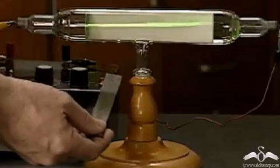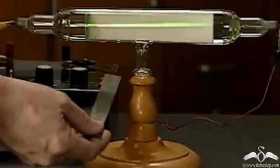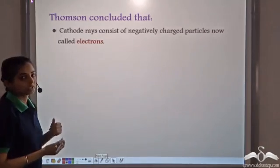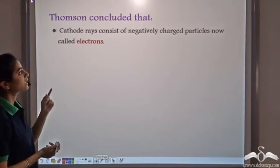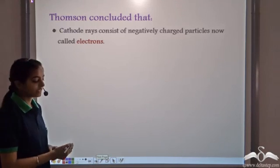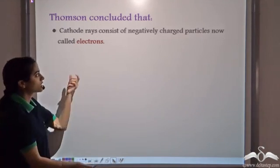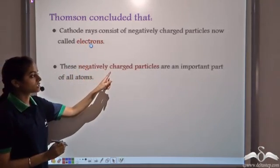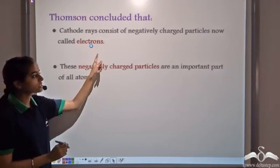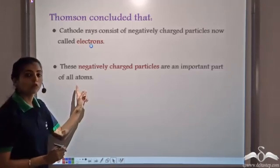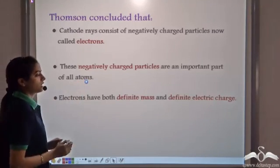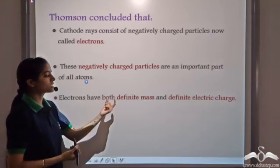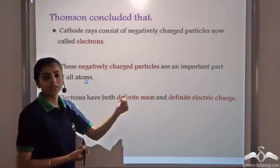Since the beam moved away from the negatively charged rod, like charges repel, so the cathode ray consisted of negatively charged particles. Thompson concluded that cathode rays consist of negatively charged particles, now called electrons. Different experiments confirmed that electrons have both definite mass and definite electric charge.